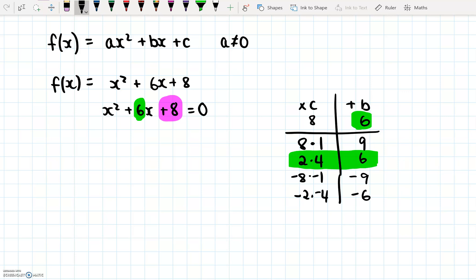So in this case, we would say (x + 2)(x + 4) = 0. Then we can say x + 2 = 0, or x + 4 = 0. Therefore, x = -2, or x = -4.